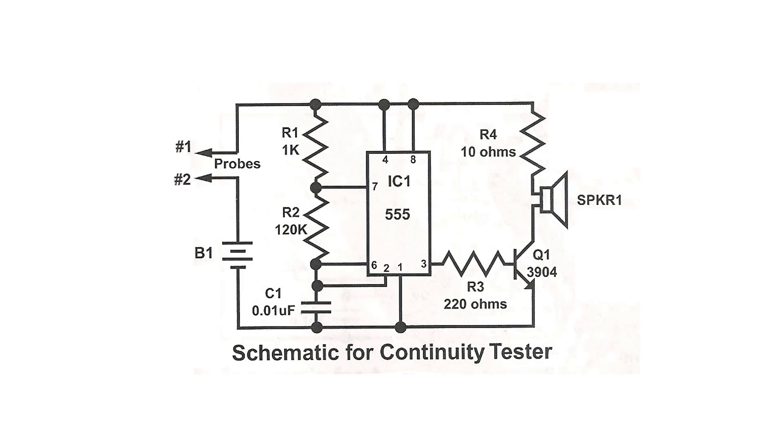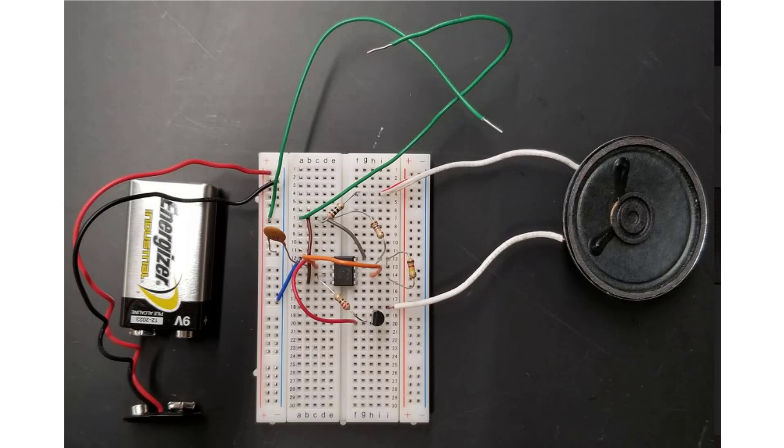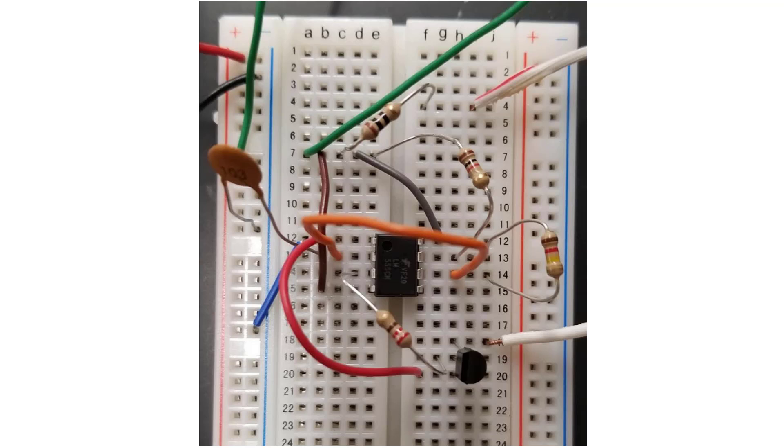So we're going to start as an example with this pretty simple schematic, this continuity tester to tell if a circuit has any breaks in it or if it's a complete circuit. It's a fairly simple circuit and yet this has enough components and can show how to use KiCad to develop any kind of a circuit. So I did breadboard this circuit out just to test it, make sure it works and it worked fine. Here's a close-up of what the components look like on the breadboard. So now the idea is let's take that schematic and draw that in KiCad.